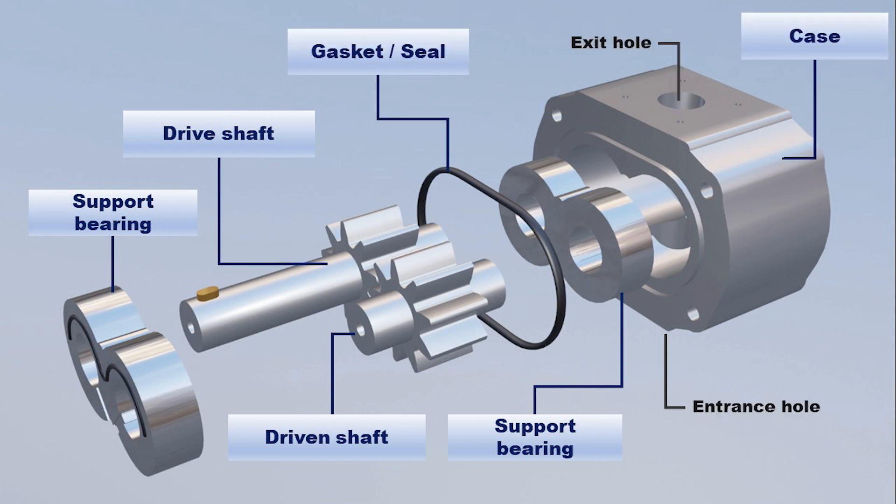The casing is the external structure of the pump, in which the internal chamber is located where the gears are coupled. This casing consists of an inlet hole that would be the suction or aspiration port, and an outlet hole that would be the pressure port.